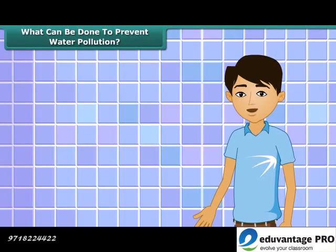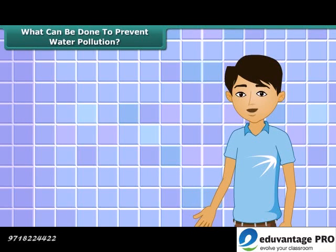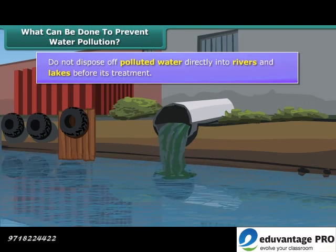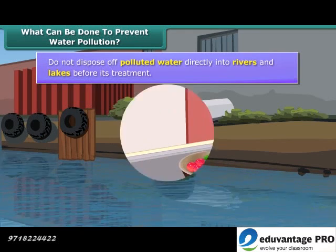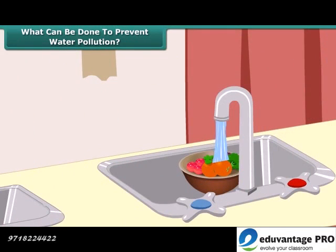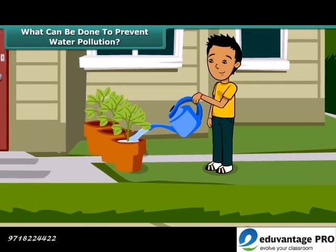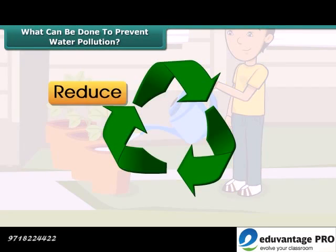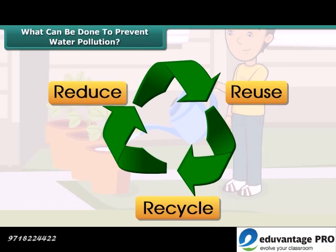Students, you need to help control water pollution. These are some simple ways: do not dispose of polluted water directly into rivers and lakes before its treatment. Reuse water that is used for washing vegetables for watering plants in the garden. Reduce, reuse and recycle should be our mantra to control water pollution.